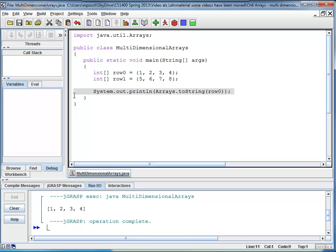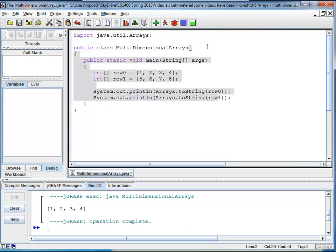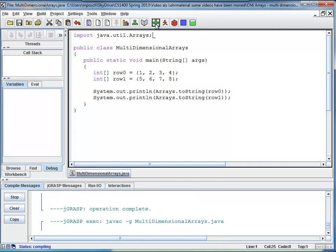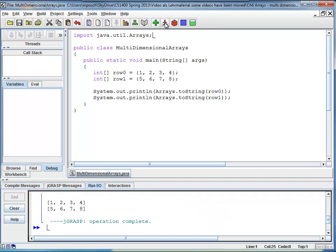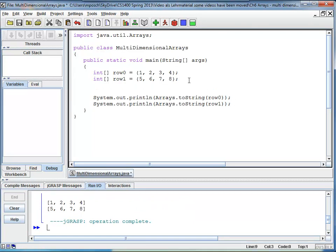I could do the exact same thing with my row 1. And then I would see both of my rows printed out. Now I'm going to create my two-dimensional array. I call it table. And it is row 0, row 1. So here table consisting out of two rows.